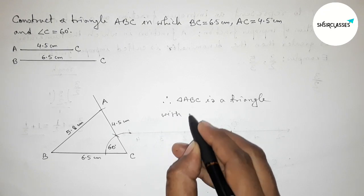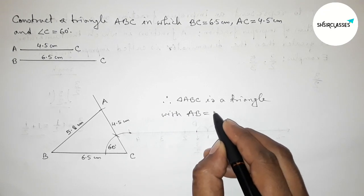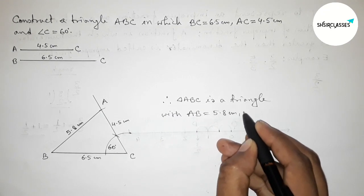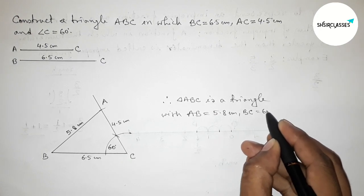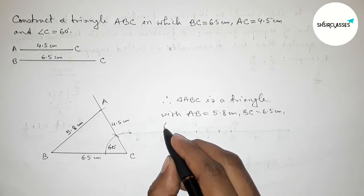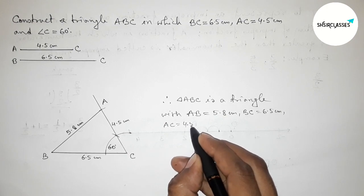Therefore, triangle ABC is a triangle with side AB equals to 5.8 centimeters, BC equals to 6.5 centimeters, AC equals to 4.5 centimeters, and angle C equals to 60 degrees.